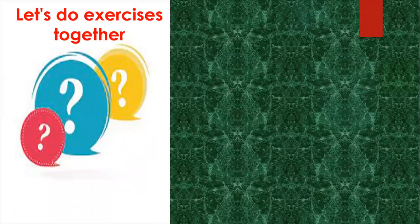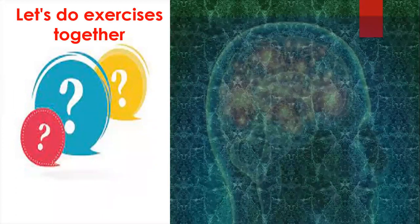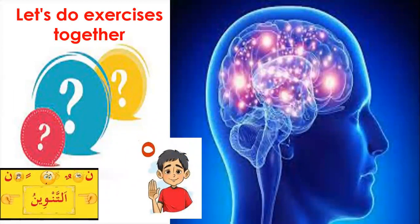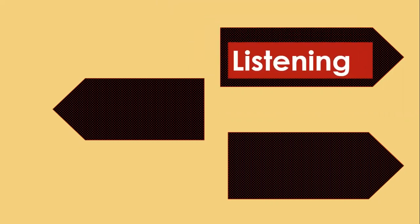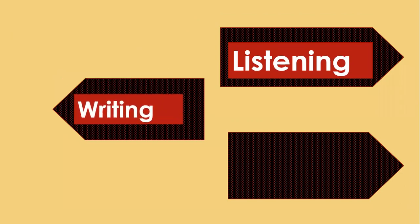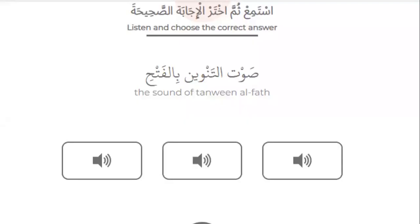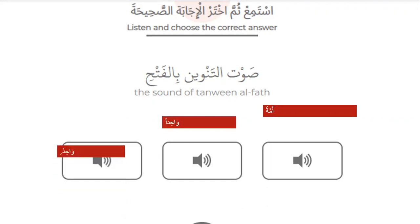Now let's do exercises together to test your knowledge about Sukun and Tanwain. I will ask you three questions — testing your listening, writing, and reading. For question one, I will test your listening. Please select and share the correct answer. Which one is Tanwain with Fathah? Listen: Ummatun, Wahidan, Wahid. Which one is Tanwain with Fathah?